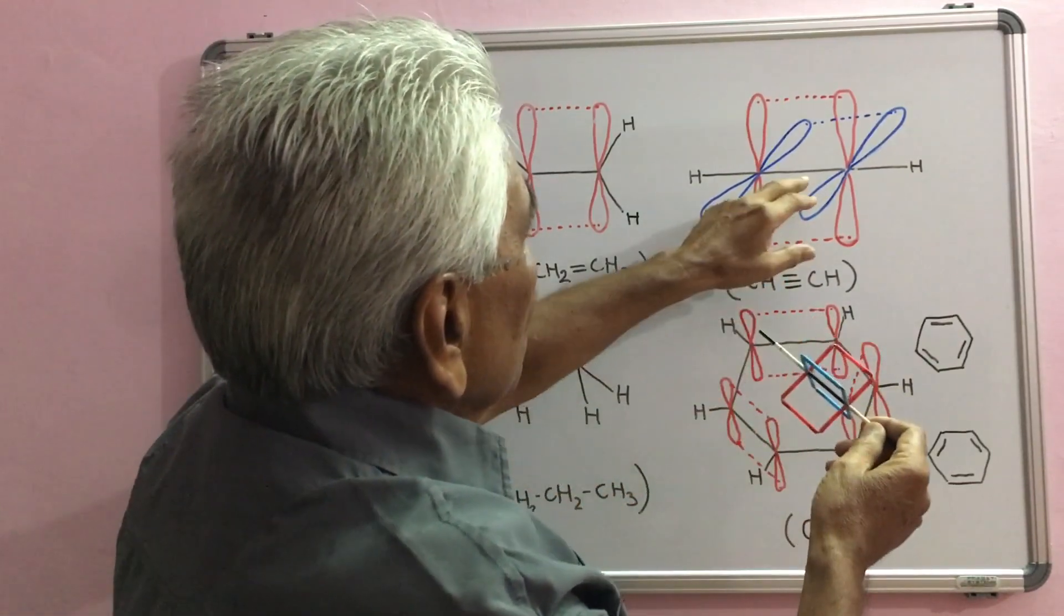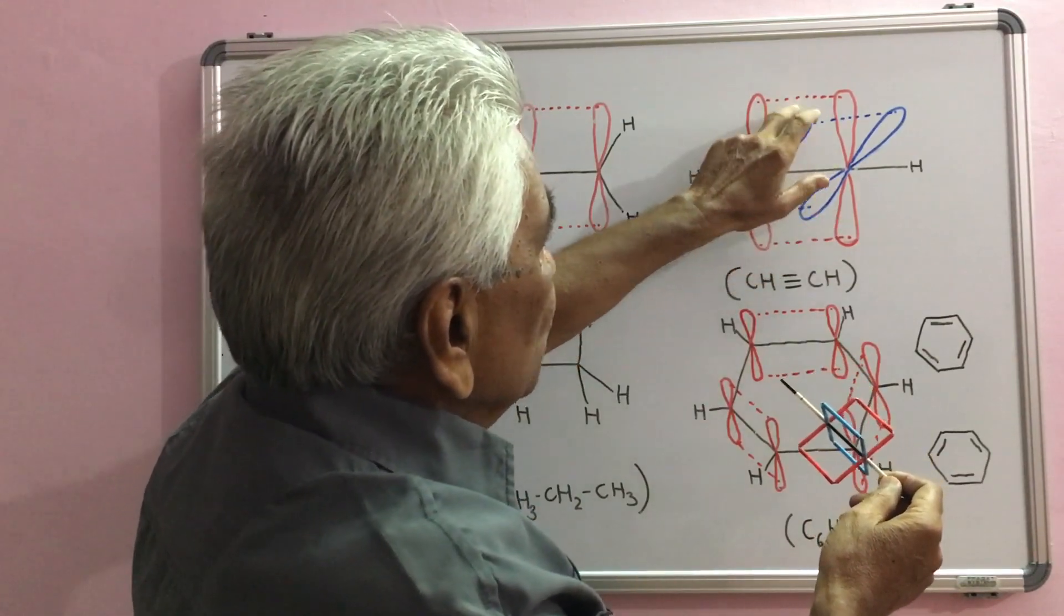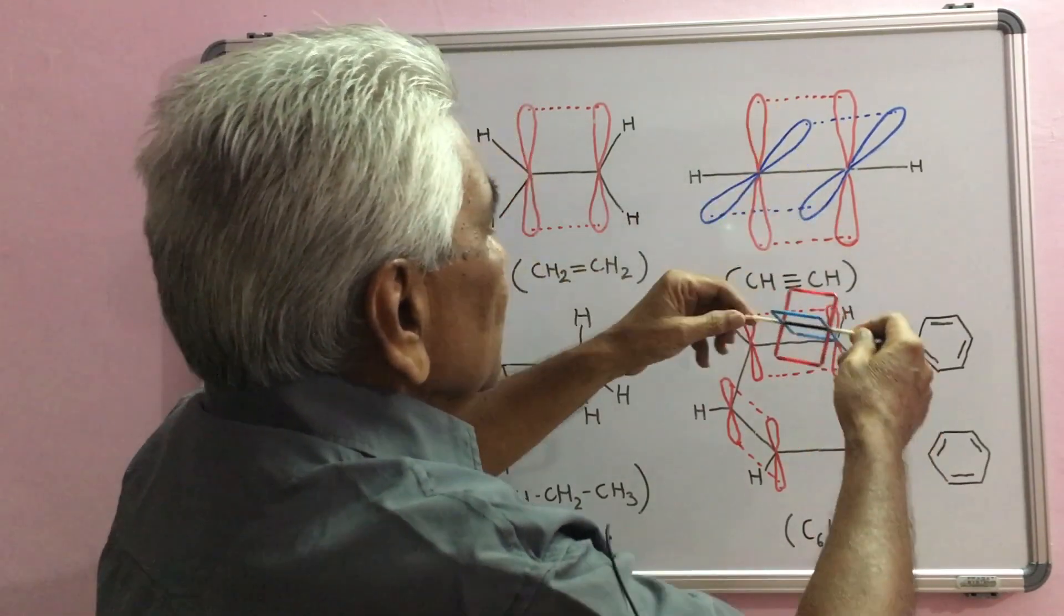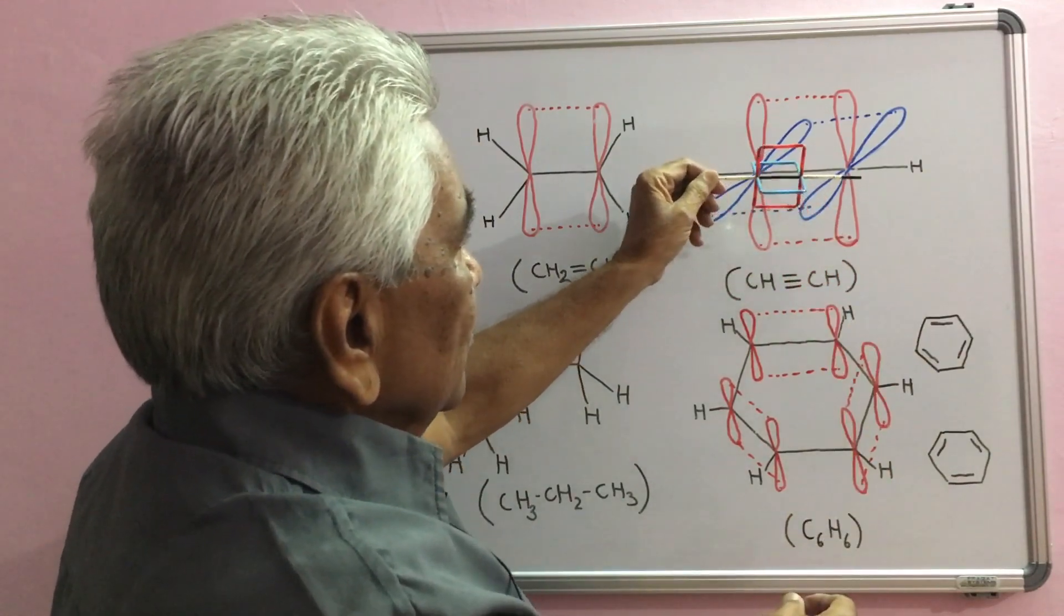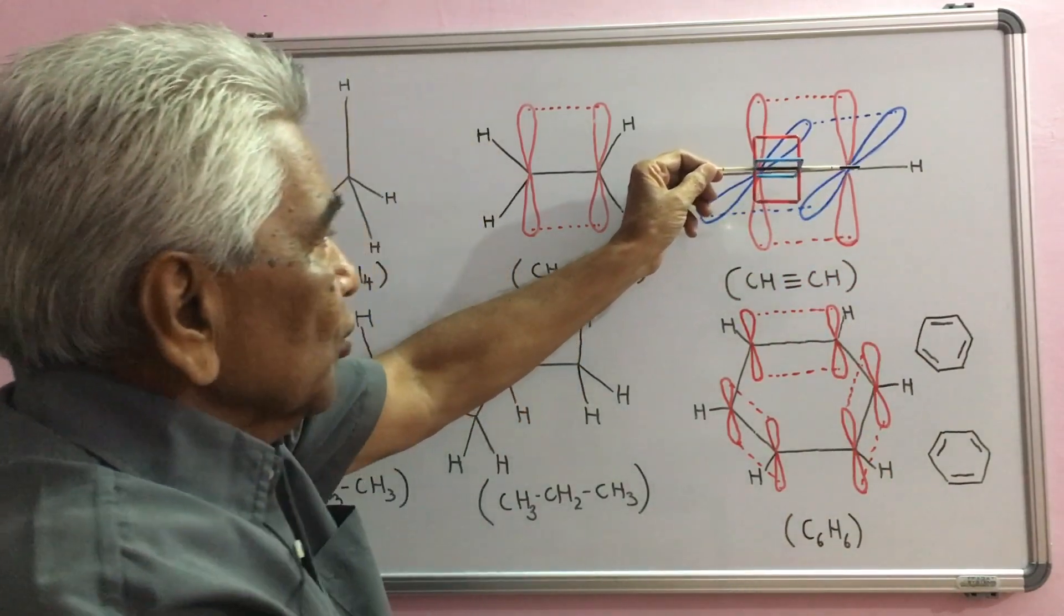In total there are one sigma and two pi. They constitute a triple bond. This is very well understood by this model.